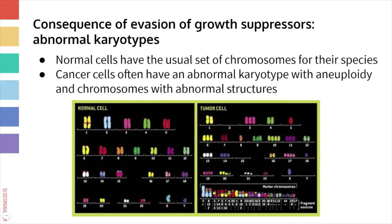One consequence of cancer cells ignoring these growth suppressors is that they often have abnormal karyotypes — pictures of a cell's chromosomes. Normal cells have a neat karyotype with two of each chromosome: one maternal and one paternal, plus two sex chromosomes. Because cancer cells ignore growth suppressor checkpoints, they often have extra chromosomes or abnormal hybrid chromosomes where part of one chromosome is stuck onto another, or missing chromosomes. Cancer cells often have karyotypes that look really messed up.